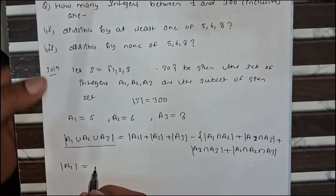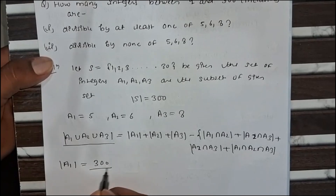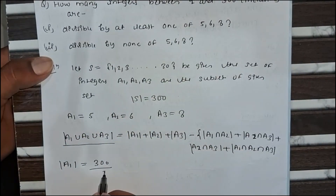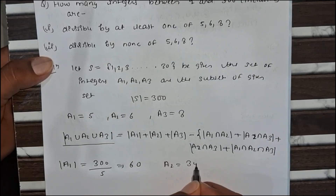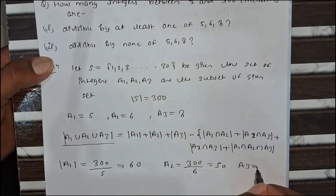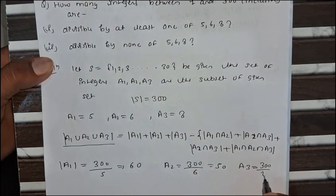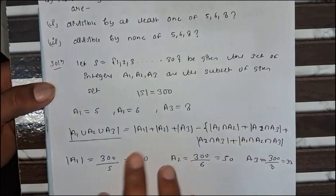First we find the individual set sizes. |A1| = 300 divided by 5 = 60. |A2| = 300 divided by 6 = 50. |A3| = 300 divided by 8 = 37. These are the values of A1, A2, and A3.